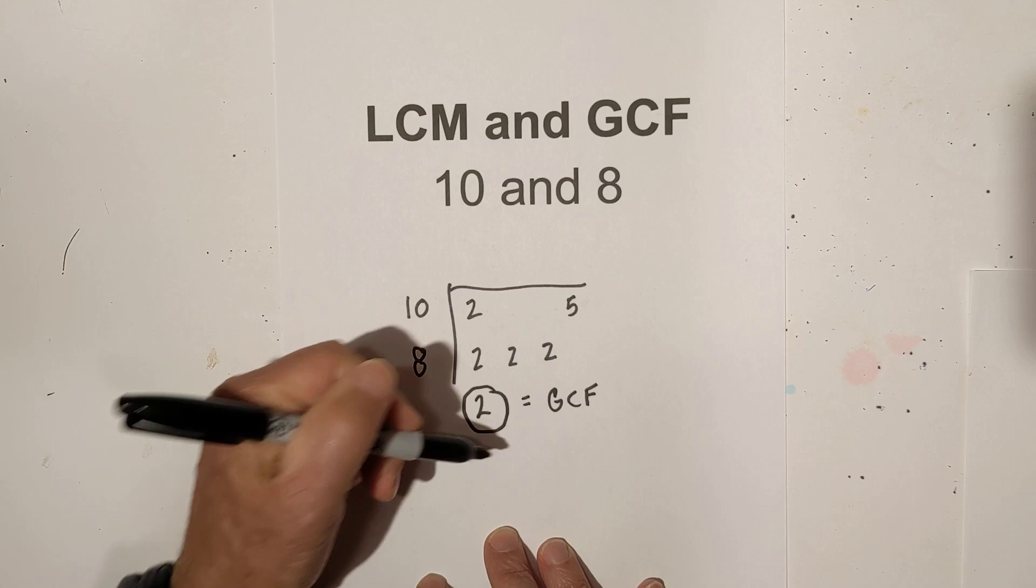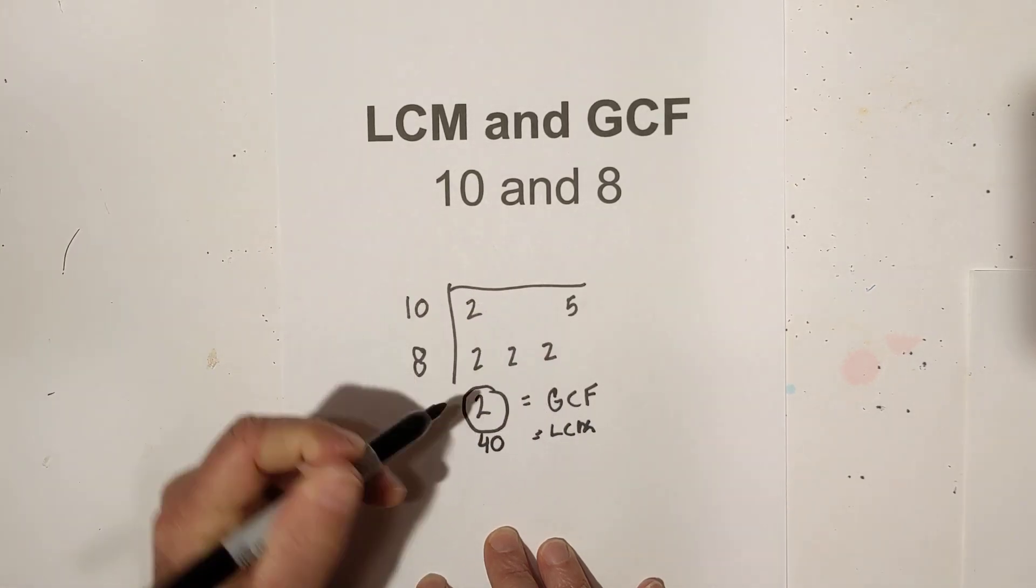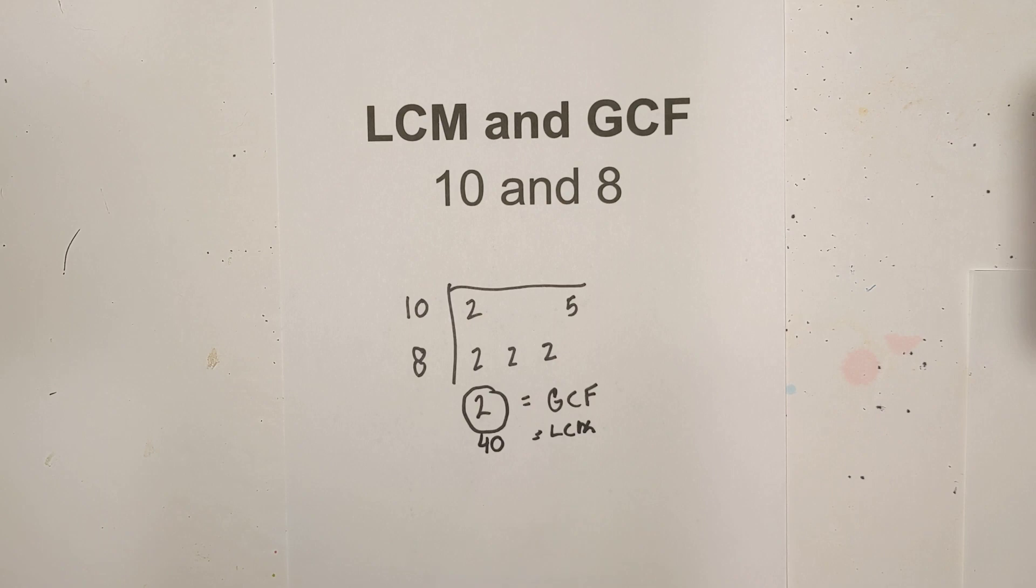So there we go. The LCM equals 40, GCF is 2. Remember, kindness multiplies kindness. Be kind to someone today.